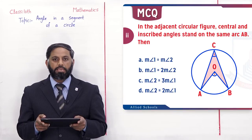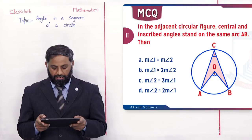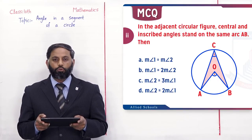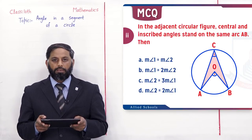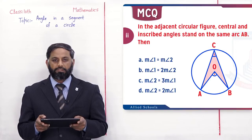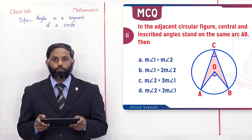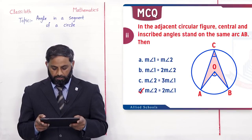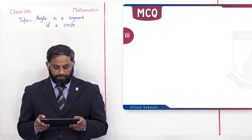Ab students, statement میں given ہے stand on the same arc AB۔ Figure میں واضح نظر آ رہا ہوگا کہ angle 2 central angle ہے اور angle 1 circumscribed angle ہے۔ ہم یہ proof کر چکے ہیں کہ central angle twice ہوتا ہے circumscribed angle سے۔ تو measurement of angle 2 = 2 × measurement of angle 1، جو کہ D option ہے۔